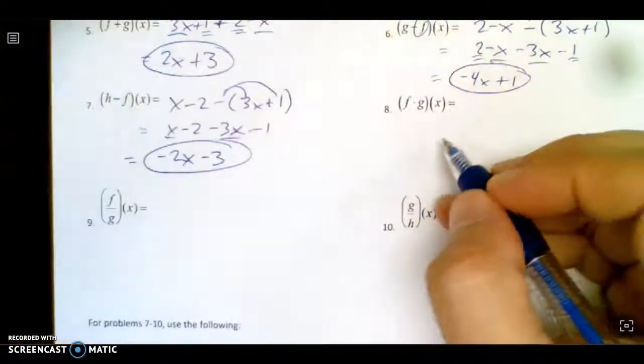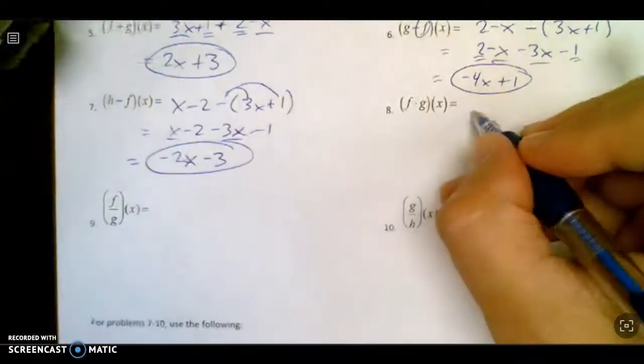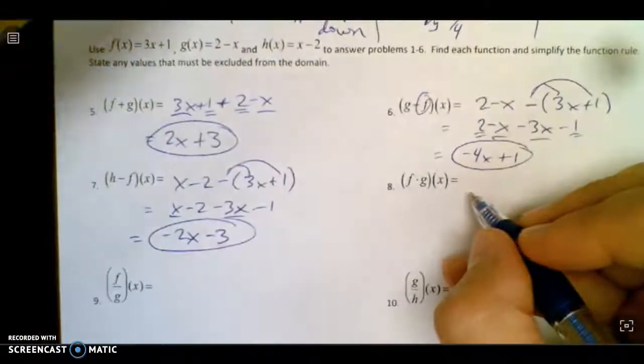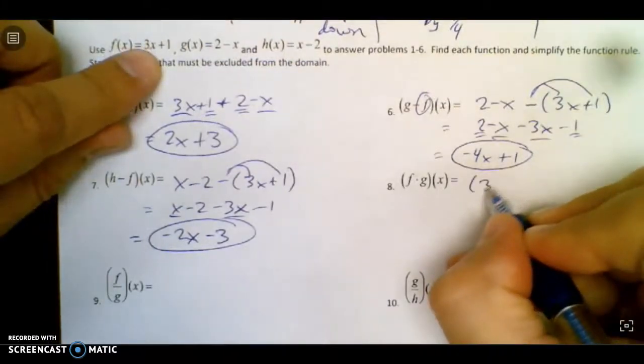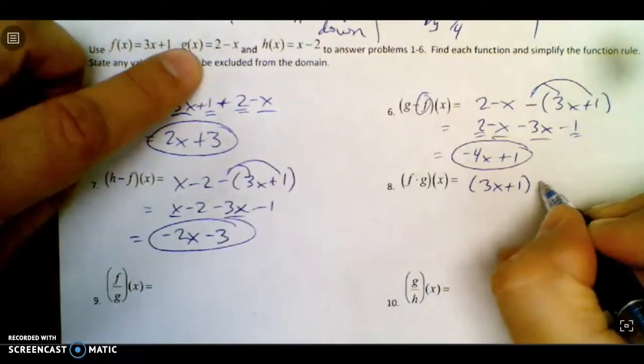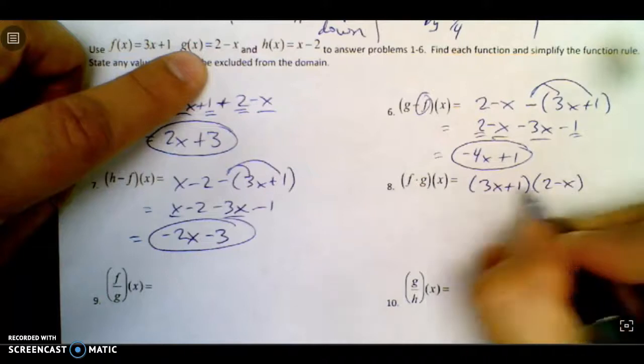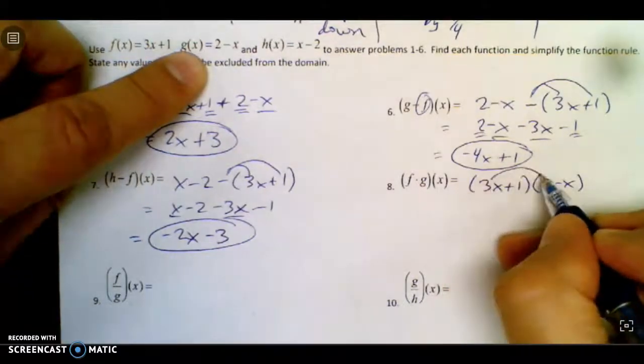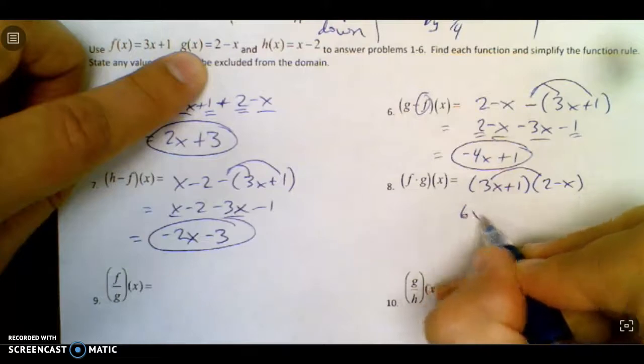Now we get to a little tougher one, f times g. So you've got to put them both in parentheses. Here's f of x, which is 3x plus 1. Here's g of x, 2 minus x. And now we do our FOIL thing. So you've got our first times first. It's 6x.